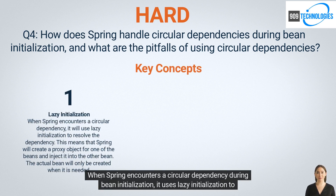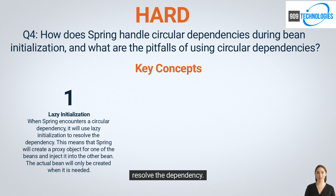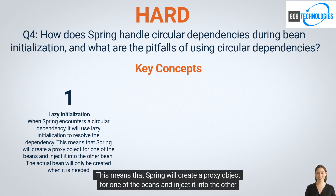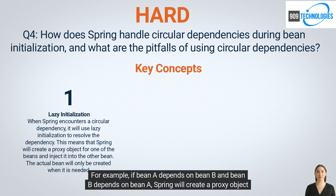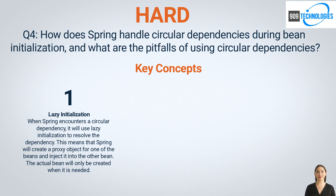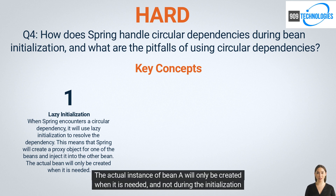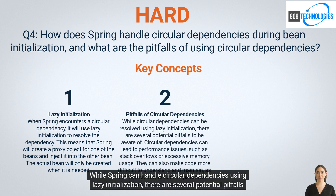When Spring encounters a circular dependency during bean initialization, it uses lazy initialization to resolve the dependency. This means that Spring will create a proxy object for one of the beans and inject it into the other bean. For example, if bean A depends on bean B and bean B depends on bean A, Spring will create a proxy object for bean A and inject it into bean B. The actual instance of bean A will only be created when it is needed, not during the initialization phase.